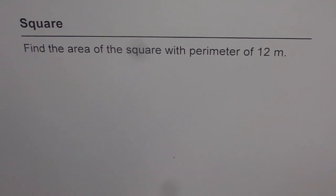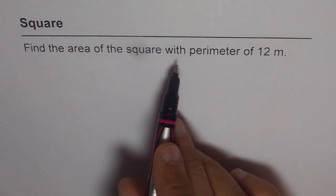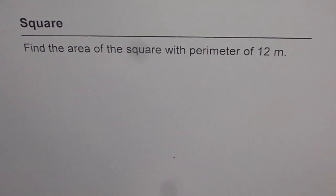Here is a thinking problem on square. It is to find the area of the square with perimeter of 12 meters. Now, how can I find area if I know the perimeter and that too of a square? That's tricky. Let's figure it out.